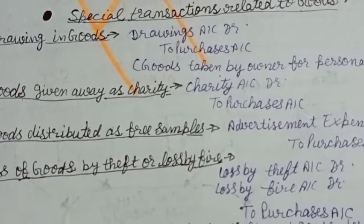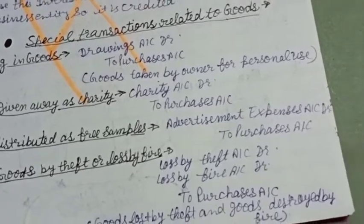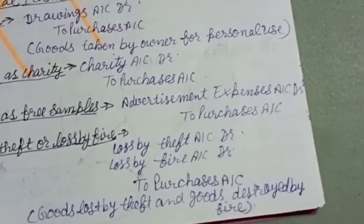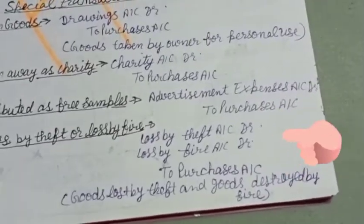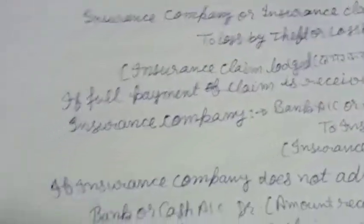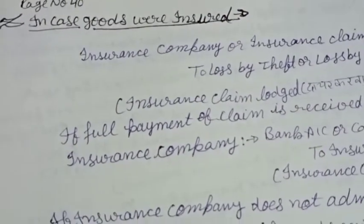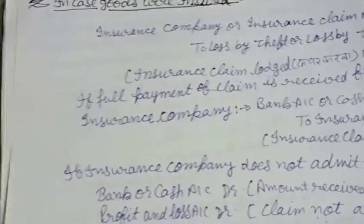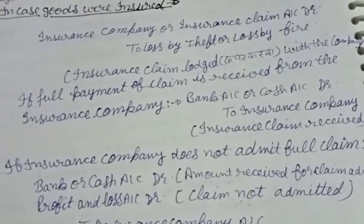For loss of goods by theft or fire: Loss by Theft Account debit (or Loss by Fire Account debit) to Purchase Account. In case goods were insured, when a claim is made against the insurance company: Insurance Company and Insurance Claim Account debit to Loss by Theft or Fire Account.